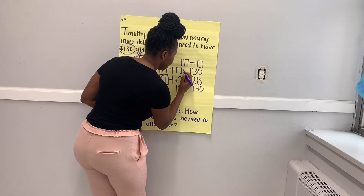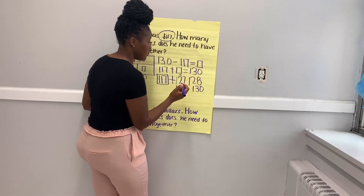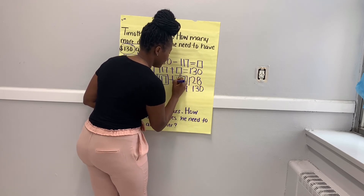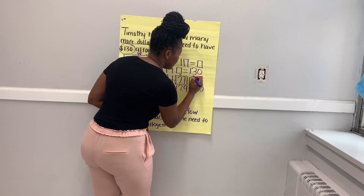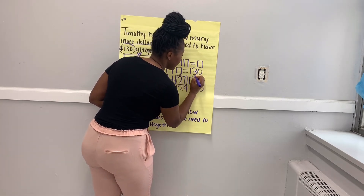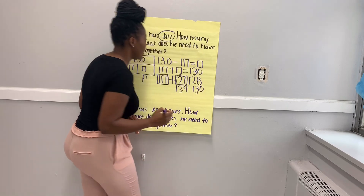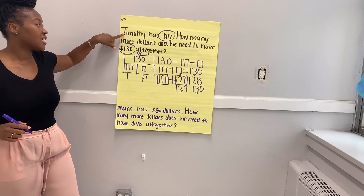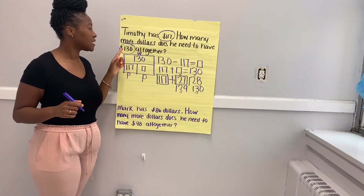So that's one ten — which is 10 — and these are ones: 10, 11, 12, 13. So Timothy needs 13 more dollars to get to $130.